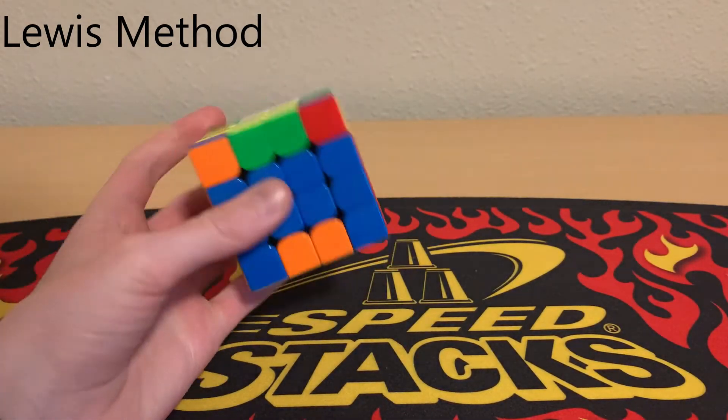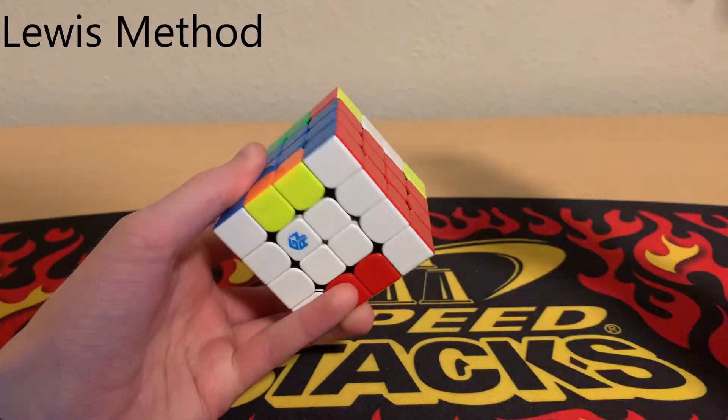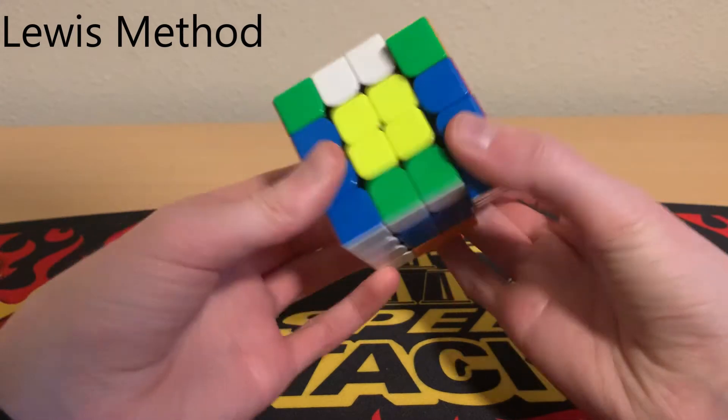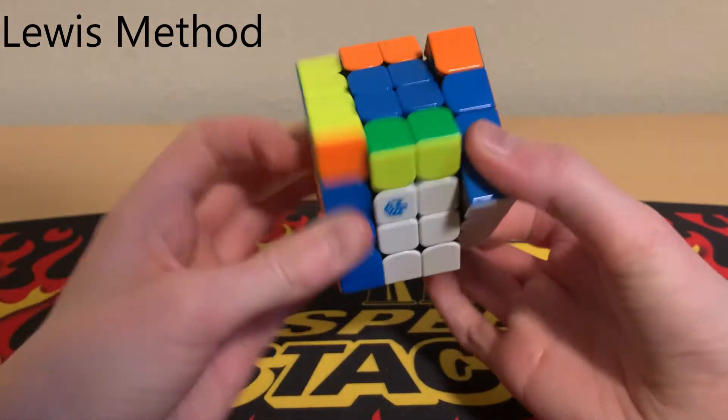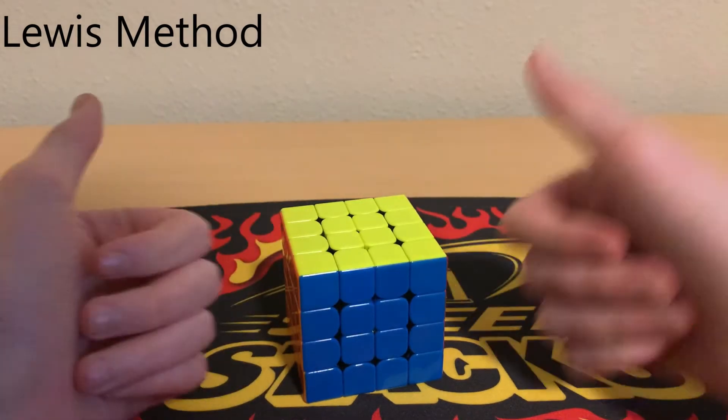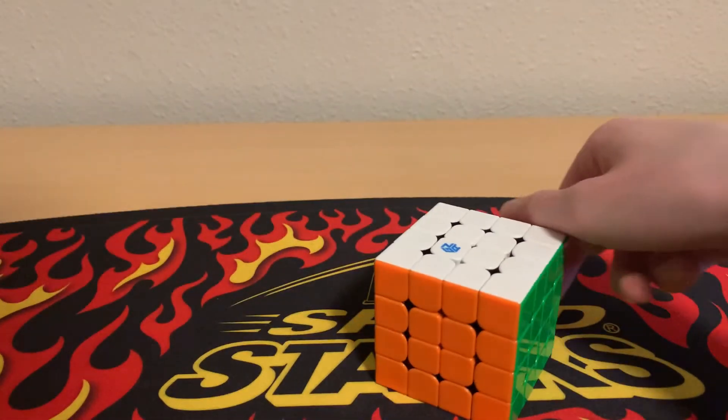Once you're done with that, you can do the same thing—recognize if you have parity. I don't because I have an even number of bad edges. Then form CMLL, LSE, and hope that there's no LSE parity. I didn't get LSE parity, so that was two different ways of how to do Roux on a 4x4, which I personally use. Meyer Method is my main and my PB single is one minute and two seconds.